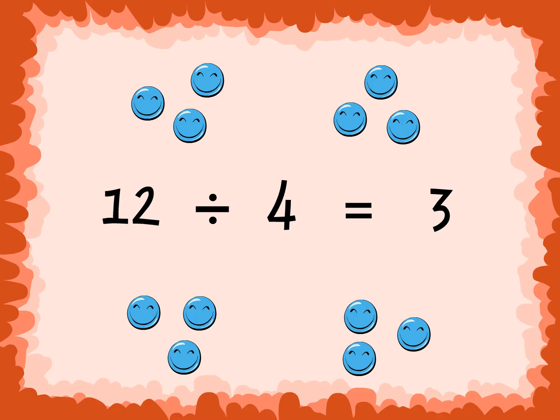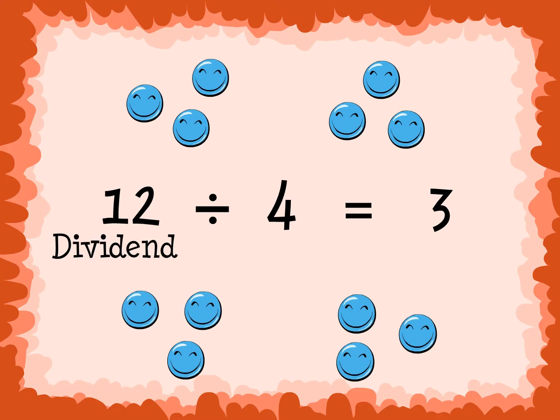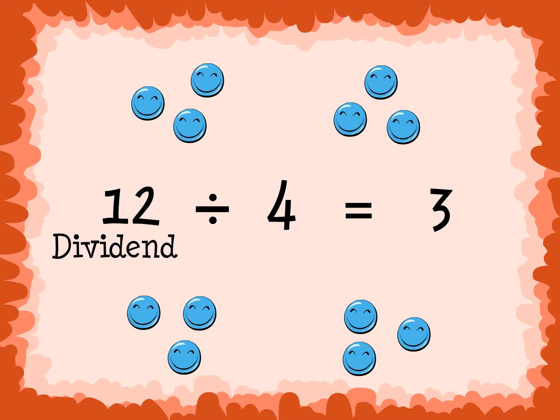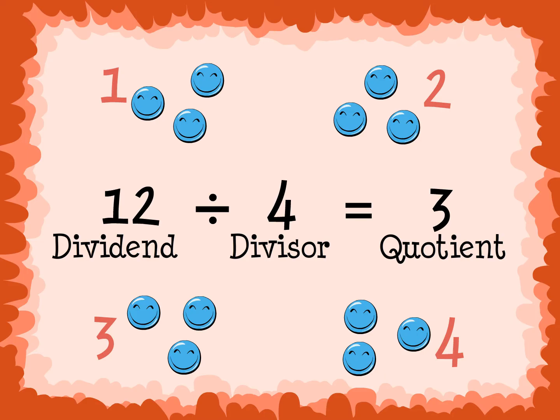The first number in a division problem is called the dividend. The dividend is the total number of objects in the division problem. The second number is called the divisor. The divisor is the number of equal groups we need to divide the dividend into. The answer in a division problem is called the quotient. The quotient is how many objects there are in each of the groups.